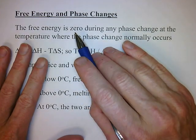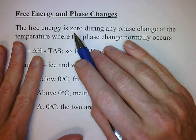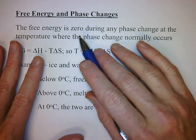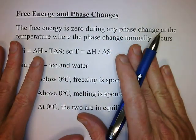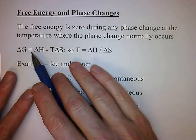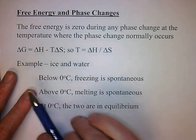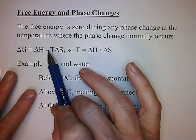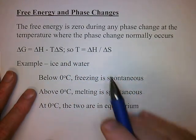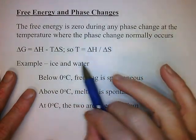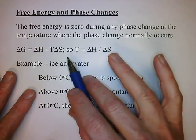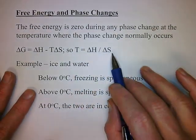Free energy is zero at the phase transition. There's still an enthalpy change and an entropy change, but there's no free energy change. If we know that delta G is zero, we can set these two terms equal to one another, move the T delta S to the other side, divide both sides by delta S, and now we know the temperature. We can calculate the temperature at which the phase change is taking place from the enthalpy change and the entropy change.